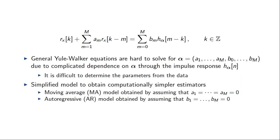Unfortunately, solving the Yule-Walker equations for the general ARMA model is quite difficult. Even though we see the parameters entering explicitly, they also enter implicitly in the impulse response since they define the system and therefore the impulse response of the system. In general, the Yule-Walker equations form a set of nonlinear equations that need to be solved for the parameters, and that is quite hard. So the way that this is usually tackled is by simplifying the model.